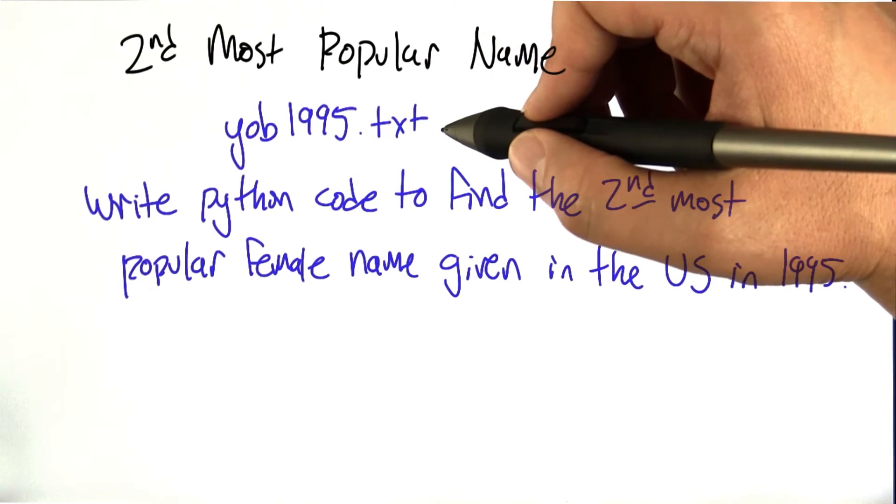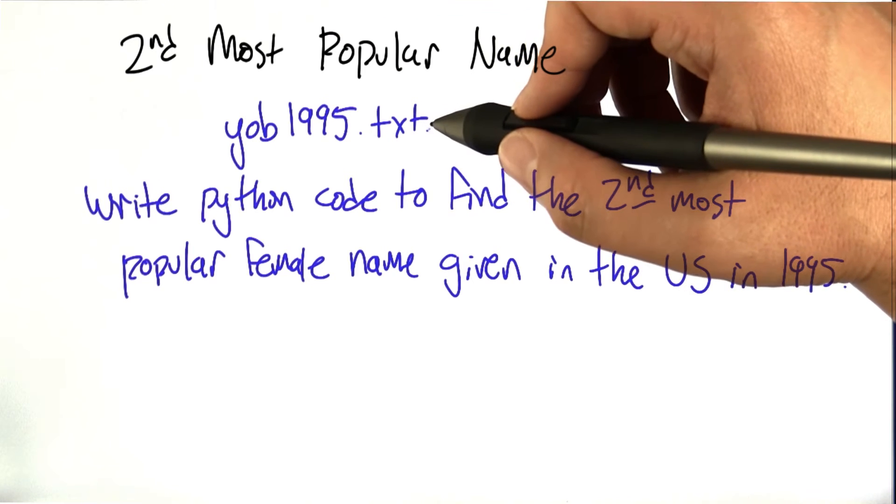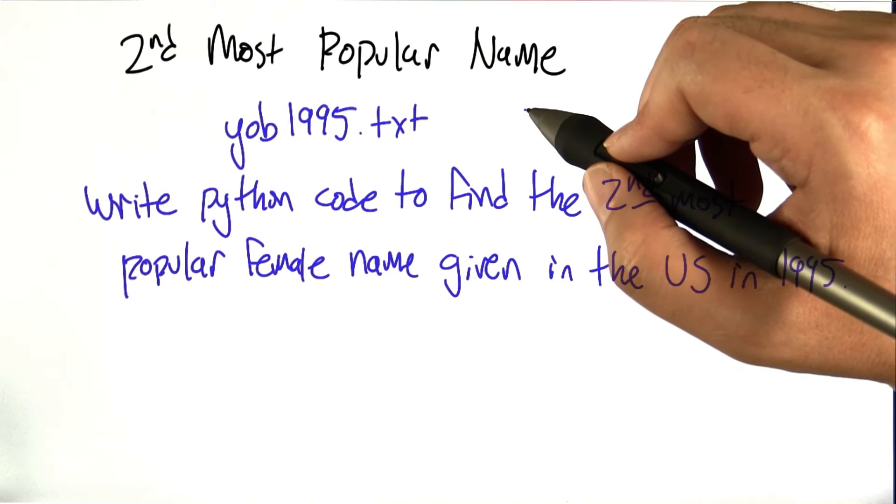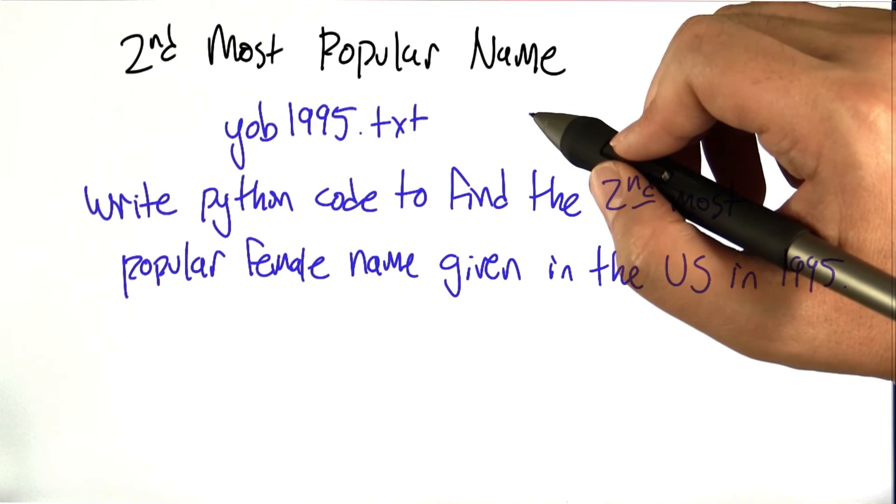If you take a look at the file, you should be able to download this and see the format. It's pretty simple: it's the name, the sex, and the number, essentially a measure of how popular the name is.